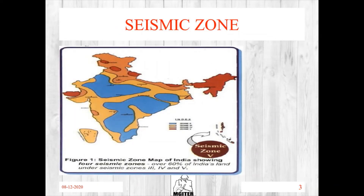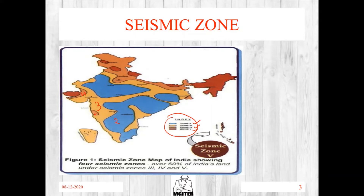Based on the frequency and magnitude of earthquakes, India is divided into seismic zones: Zone 2, Zone 3, Zone 4, and Zone 5. Zone 5 has the most frequent earthquakes with high magnitude, while Zone 2 has less frequent earthquakes with lower magnitude.